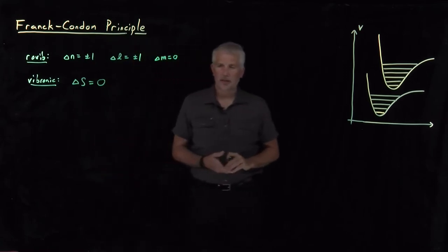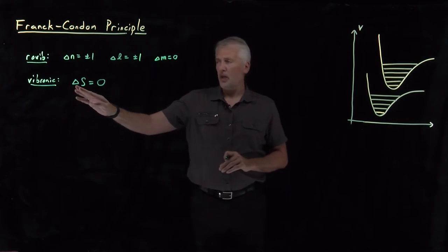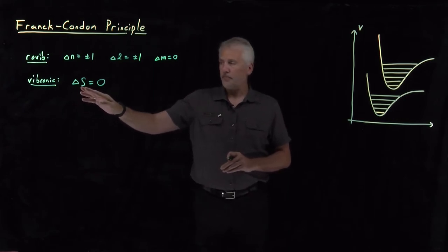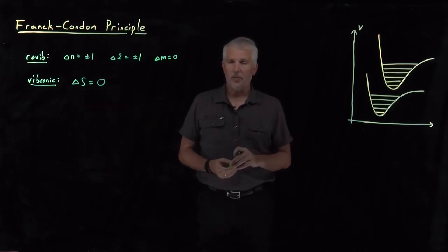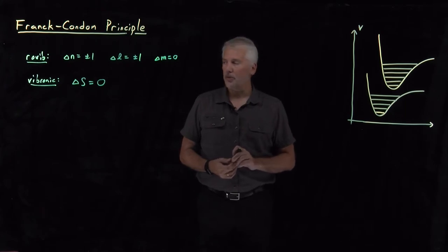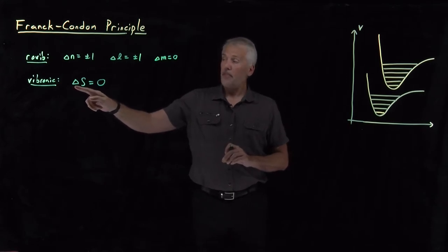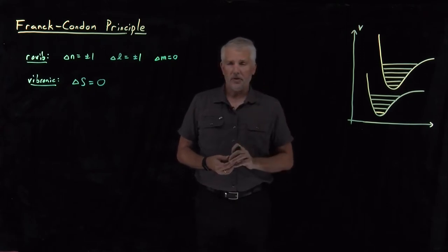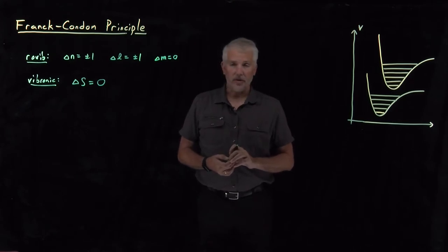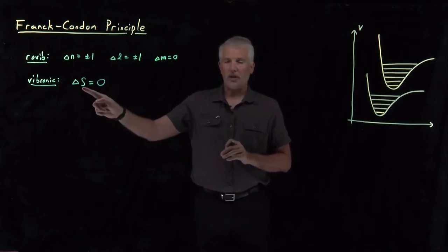The vibronic selection rules are somewhat simpler. The spin state of the molecule can't change. We haven't talked about molecular spin in this sense — the spin of electrons in a molecule — we'll talk more about that when we discuss the quantum mechanics of electrons in molecules. For now, molecules have a property called spin, and the spin is not allowed to change. You may have heard of this idea in organic or analytical chemistry — if you've heard molecules referred to as being in a singlet state or triplet state, that's talking about the spin of the molecule.